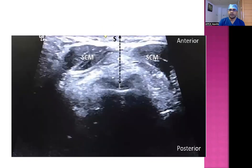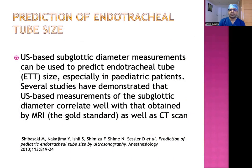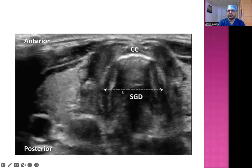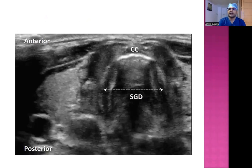This is the skin-to-epiglottis sonographic view. Coming to the second usage, ultrasound can also be used to predict endotracheal tube size. Ultrasound-based subglottic diameter measurement can predict endotracheal tube size, especially in pediatric patients. Several studies have demonstrated that ultrasound-based measurements of the subglottic diameter correlate well with MRI, the gold standard, as well as CT scan. Using the linear probe at the cricoid cartilage, the subglottic diameter measurement can be used to select the endotracheal tube size from standard charts.